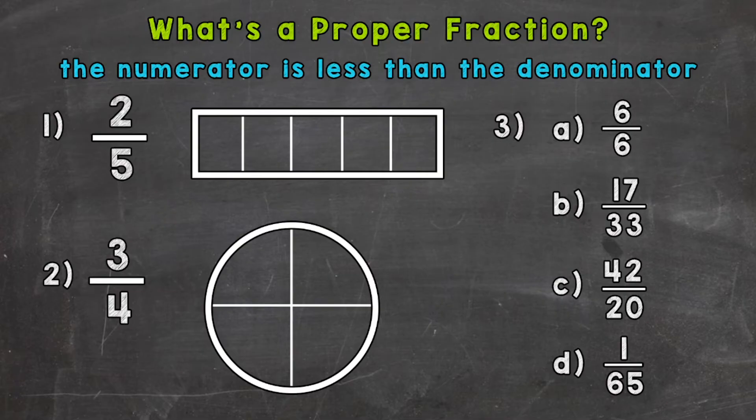Now let's model two-fifths to prove that it's less than a whole. Now to the right of this, I have a whole rectangle cut into fifths. So let's fill in two-fifths. This would be one-fifth and two-fifths. So you can see that we have less than a whole there. That fraction represents less than a whole, therefore, a proper fraction.